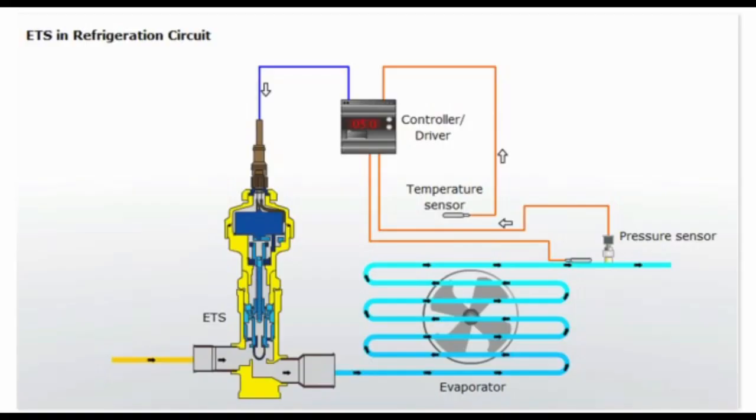The EEV allows for more precise control over refrigerant flow, which leads to better control over evaporator temperature and more efficient operation. By adjusting refrigerant flow to match actual cooling demand, the EEV helps reduce energy consumption, improve system performance, and extend equipment life. In the picture, it's shown how suction temperature and pressure are measured by the ECU unit, also known as EEV controller or driver, and its connection to the EEV valve.